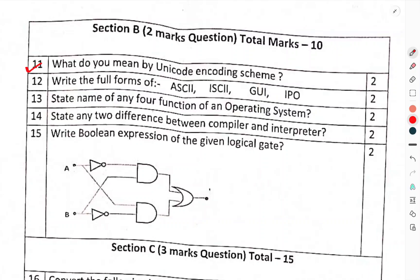Section B, 2 marks question, total 10 marks. What do you mean by Unicode encoding scheme? Write the full form of ASCII, ISCII, GUI, IPO.